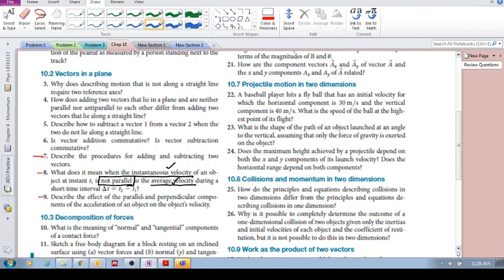Finally, describe the effect of the parallel and perpendicular components of the acceleration of an object on the object's velocity. Describe the effect of parallel and perpendicular components of the acceleration. So we're saying that there's acceleration that's parallel and there's an acceleration component that's perpendicular. Acceleration parallel and perpendicular. How do they affect the object's velocity?